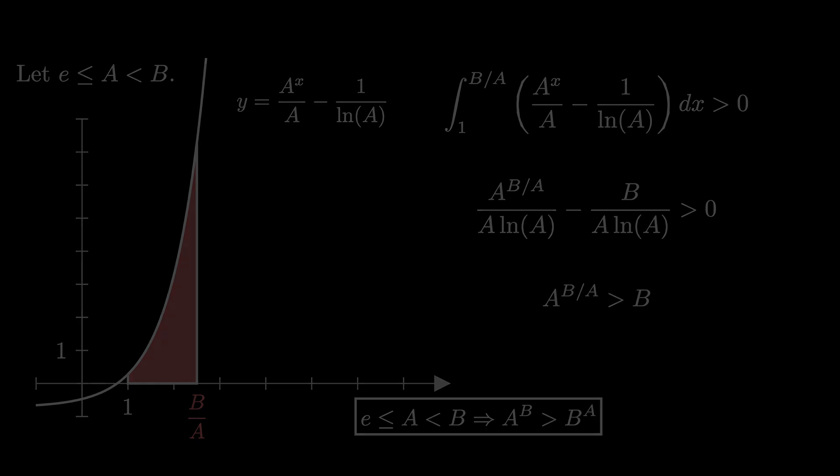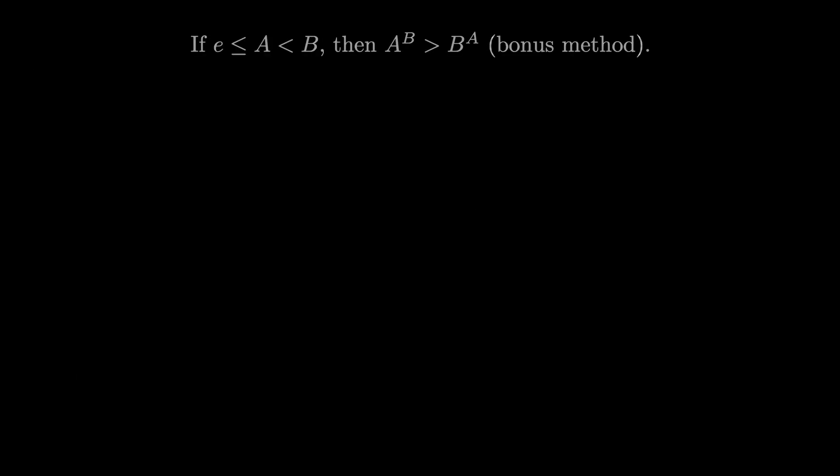These two proofs rely on relatively elementary calculus techniques. But there's a bonus method that many people suggest you should use when trying to show that when a and b are both greater than or equal to e, then a to the b is greater than b to the a.